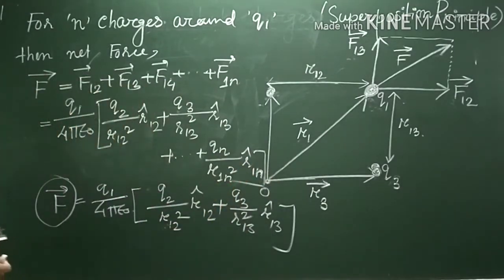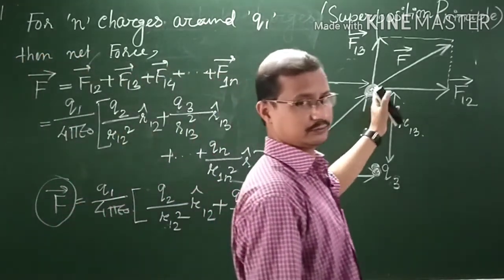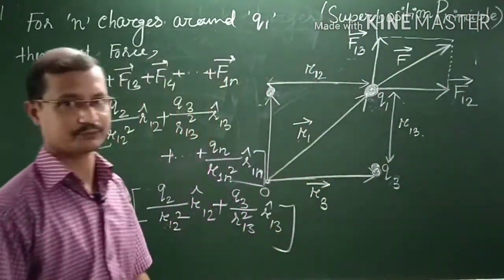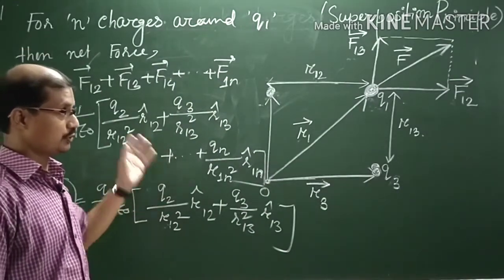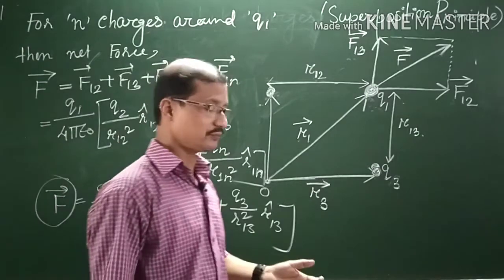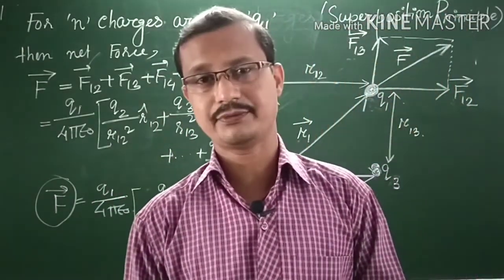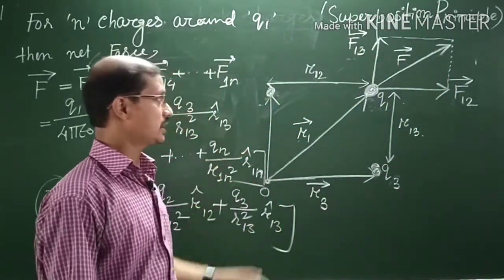So this is the total force on the charge Q1 if there are N charges around Q1. This is all about superposition principle. In the next class I will discuss electric field intensity. Thank you.